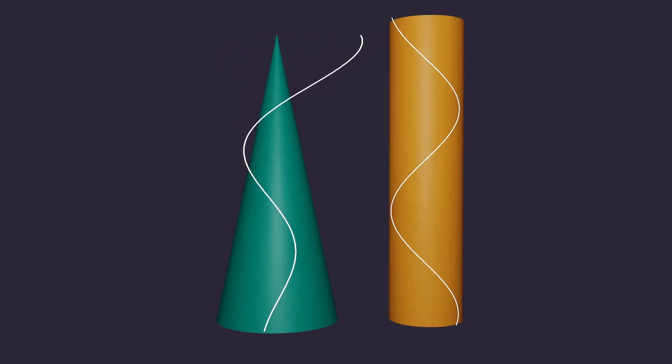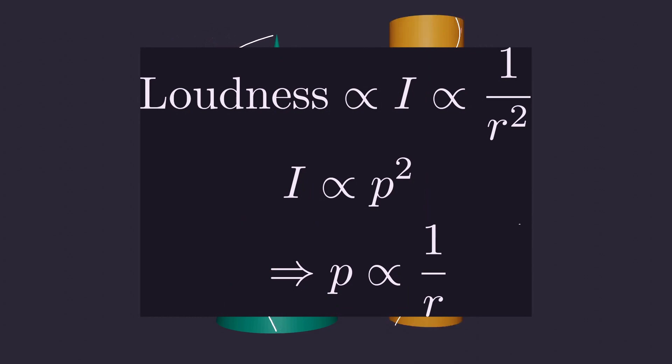Here comes the famous inverse square law into play, which you may know from Newton's law of gravitation or from Coulomb's law. Because these interactions expand spherical in all directions and we happen to live in three dimensions, this 1 over r squared sneaks into these equations. Same happens to the intensity of the sound wave and because the intensity is given by the pressure squared, through a bit of proportional reasoning, we can follow that the pressure is proportional to 1 over r.